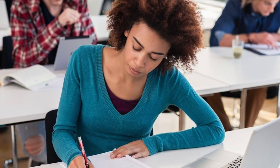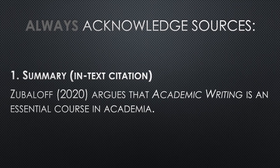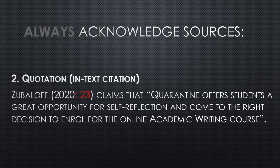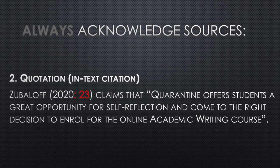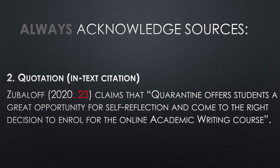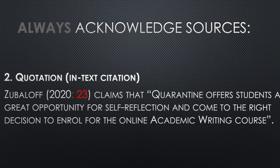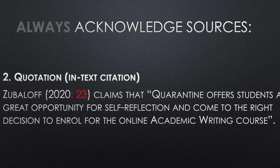So, always acknowledge other people's works. If you use other people's academic work in your text, you must provide correct acknowledgement. There are two ways to do this. First is summary and citation — for example, Zubalaf 2020 argues that academic writing is an essential course in academia. And second, quotation and citation — Zubalaf 2020, and here you provide the page number because you're going to use the direct quote, claims that 'quarantine offers students a great opportunity for self-reflection and come to the right decision to enroll for the online academic writing course.' Don't ask me in which book I got this quote.